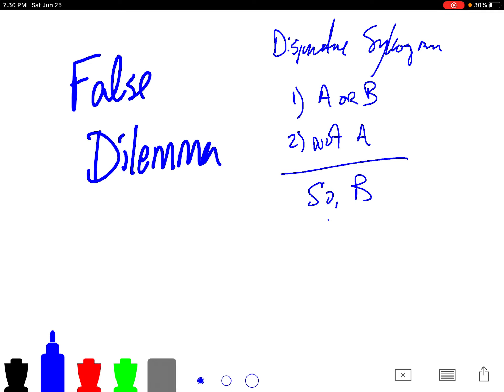And the fallacy of false dilemma occurs when basically a set of options are presented that don't actually exhaust all of the options. So, people will say, you either do this or this, we can't do that, so we've got to do this, when they'll either maybe know full well or maybe not know that there are other options.